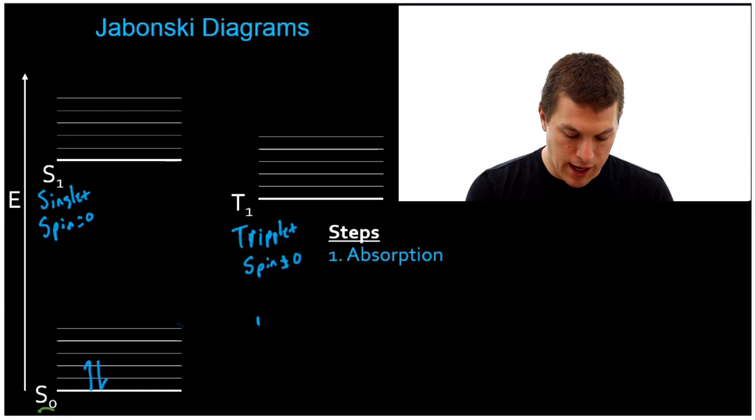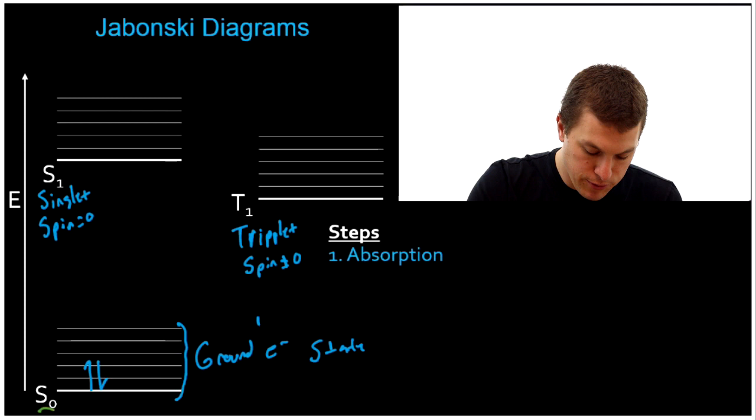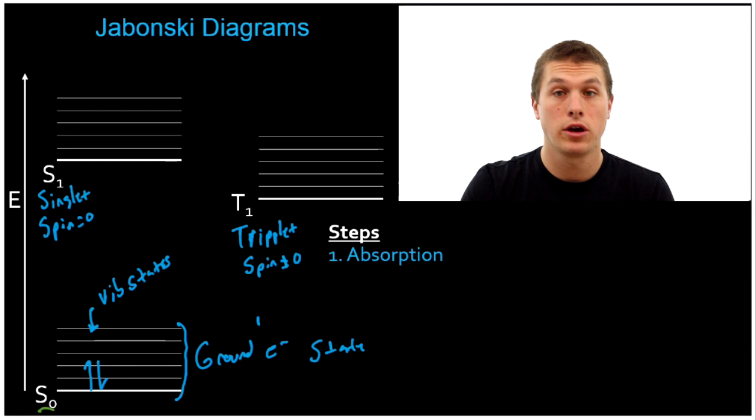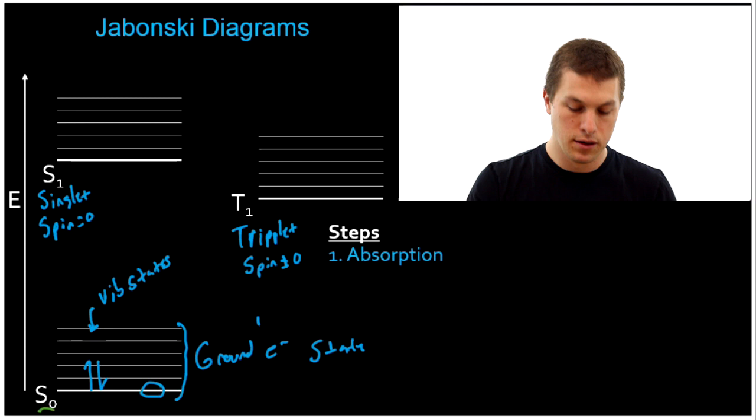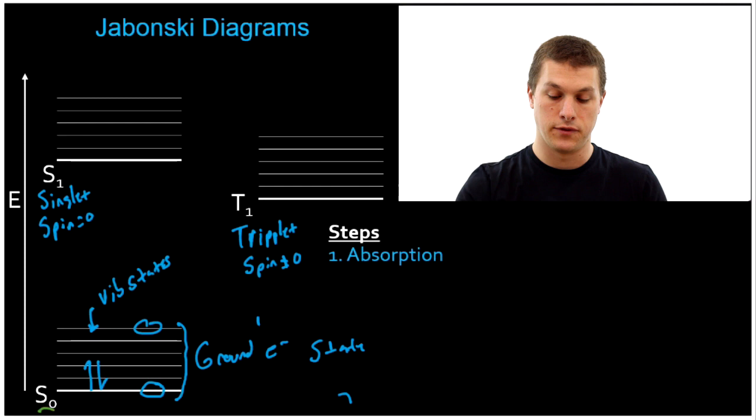What's up with all these different lines? Well, all of that is the ground electronic state — that is our electrons in the highest occupied molecular orbital. But the different lines here represent vibrational states. So our molecule can be in the ground electronic state, but it can be vibrating either a little bit, corresponding to right here, or a ton, corresponding to right here. This manifold of lines represents different vibrational states of our molecule, and that's going to be important when we start to understand fluorescence and phosphorescence.